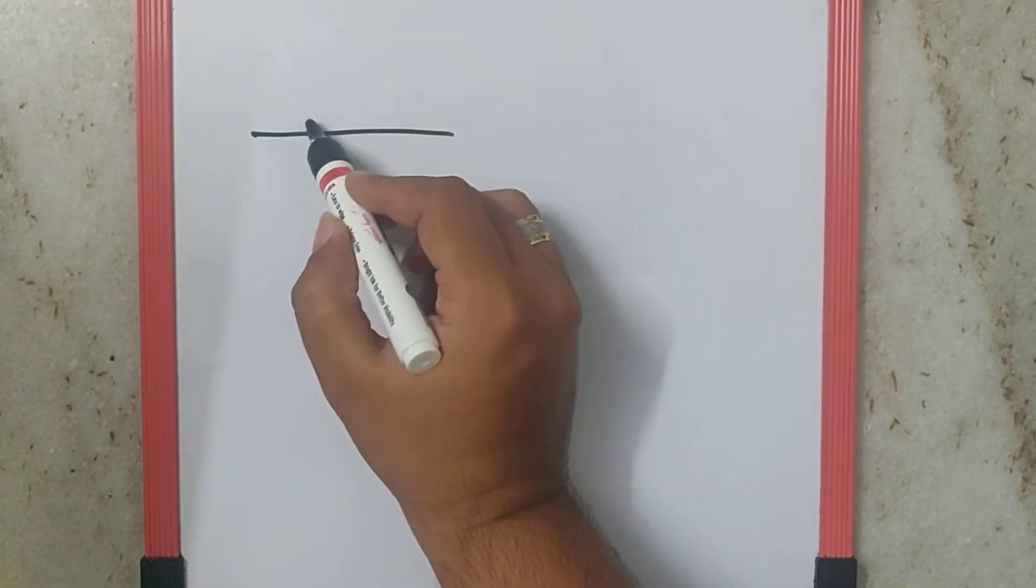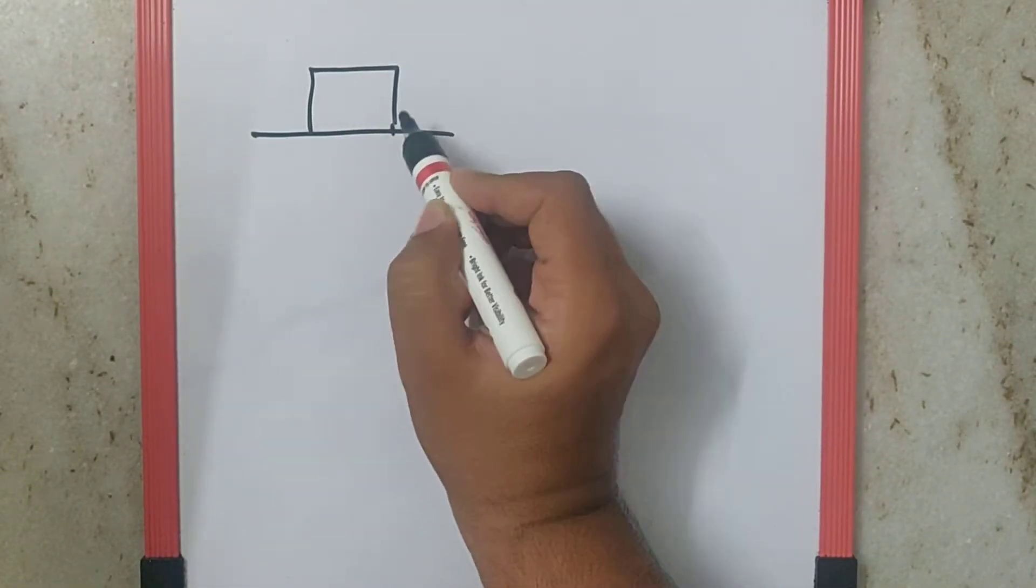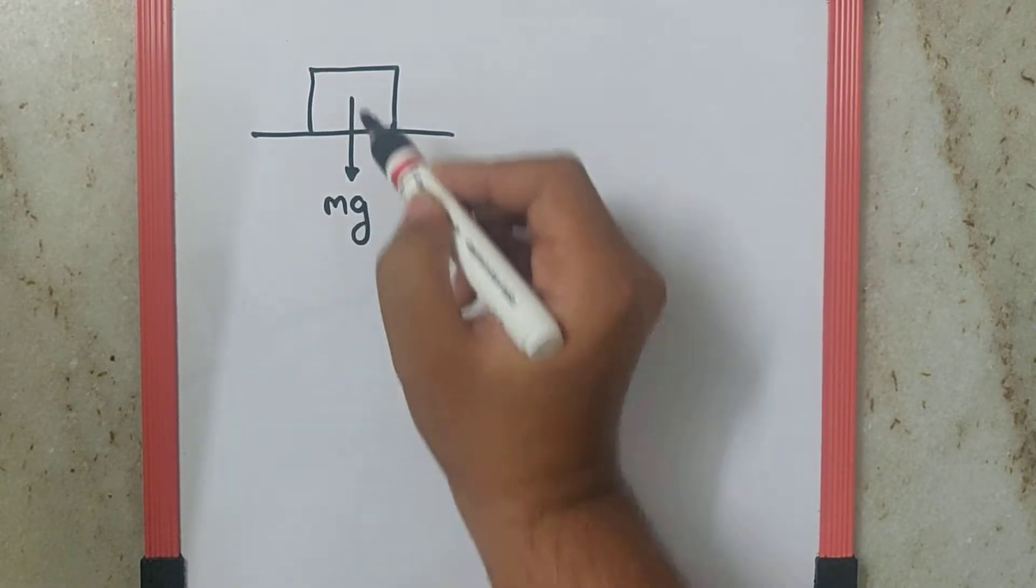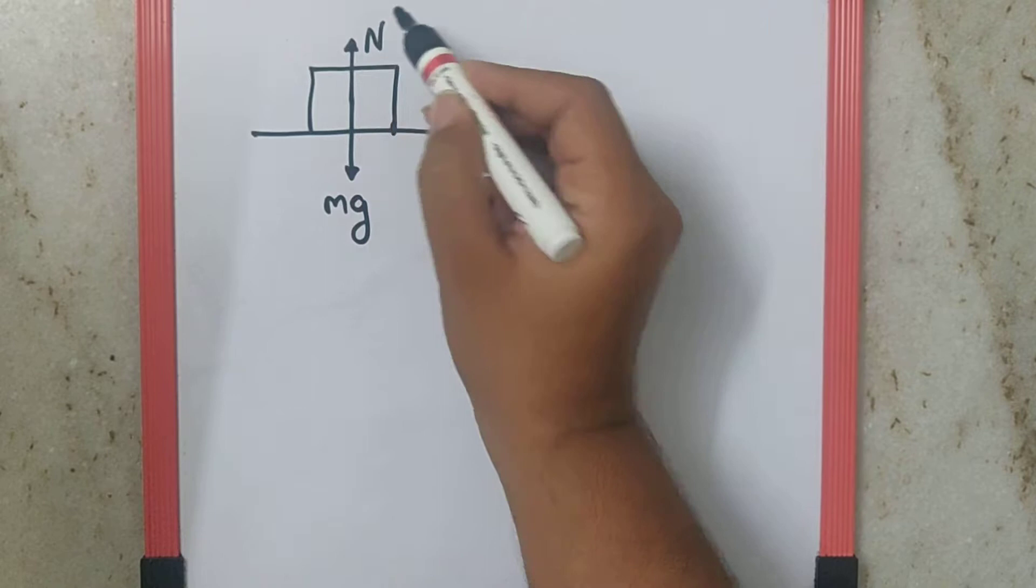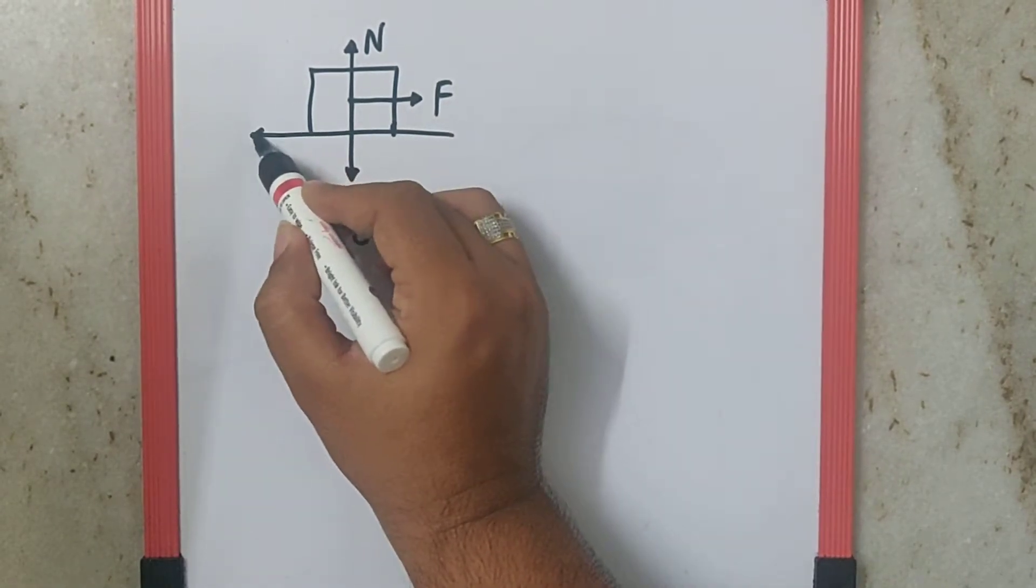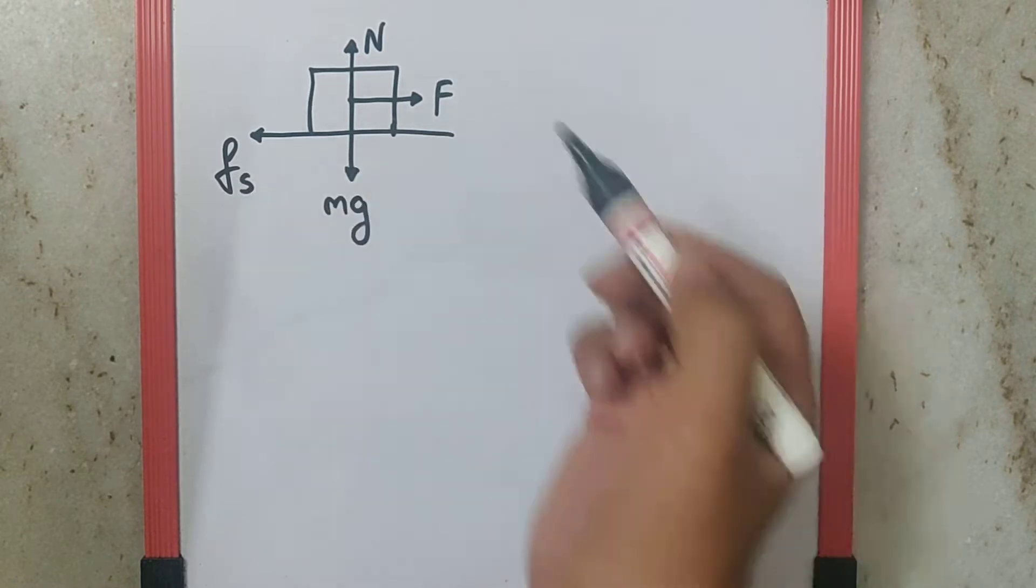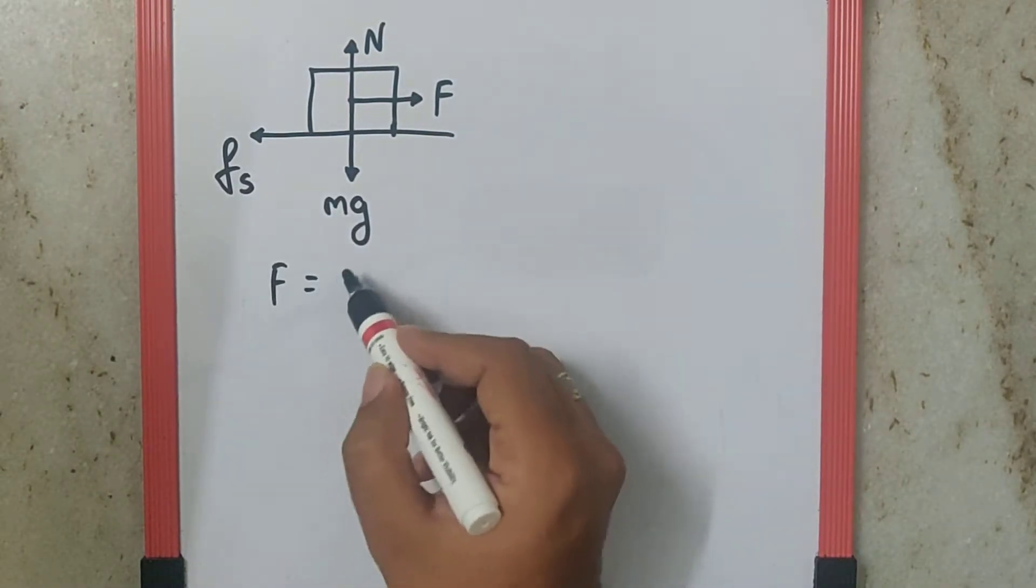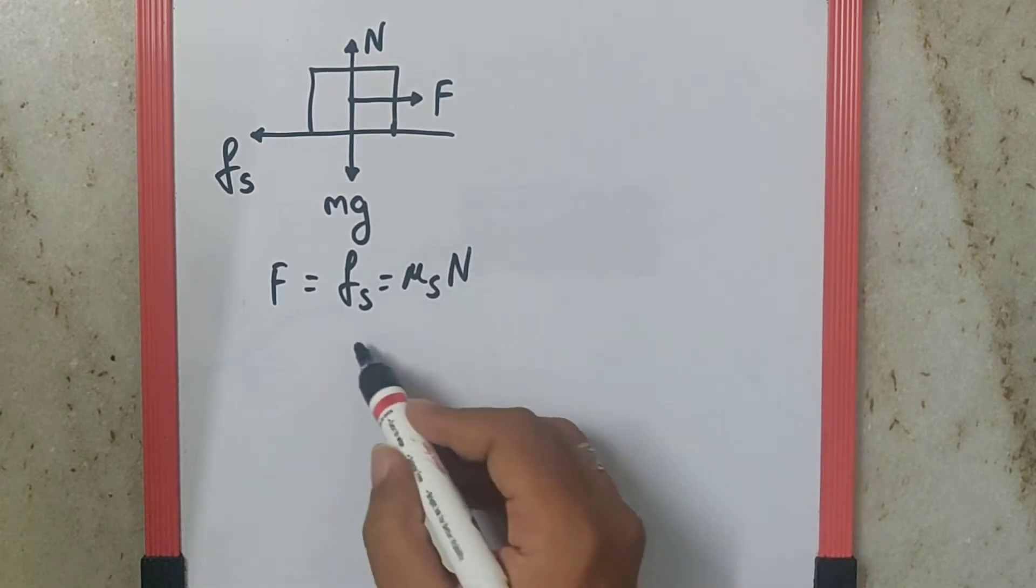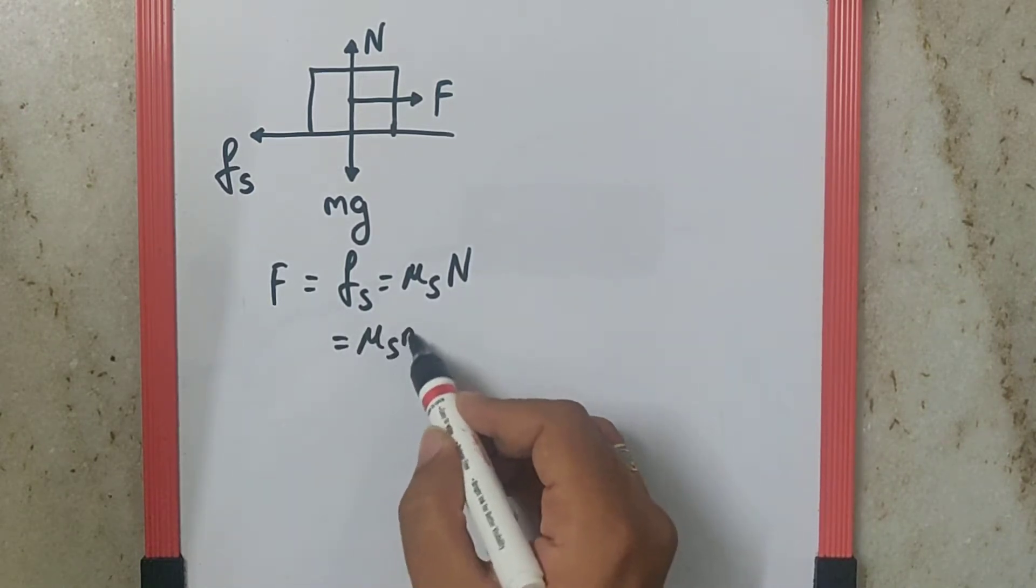Now we can say, initially, the weight is definitely mg. There is a normal reaction. And the force applied is to just overcome the static friction force. So, F is equal to Fs which is mu S N and that is mu S mg.